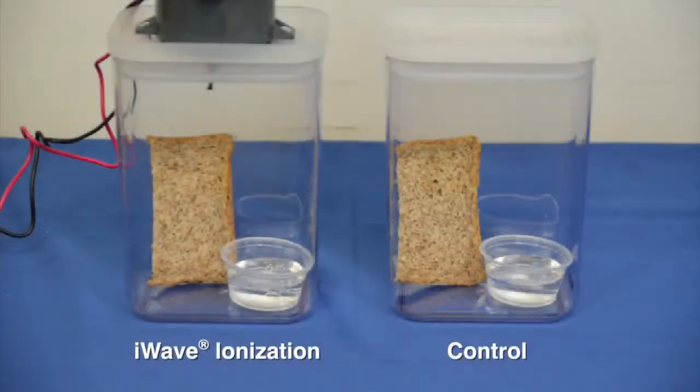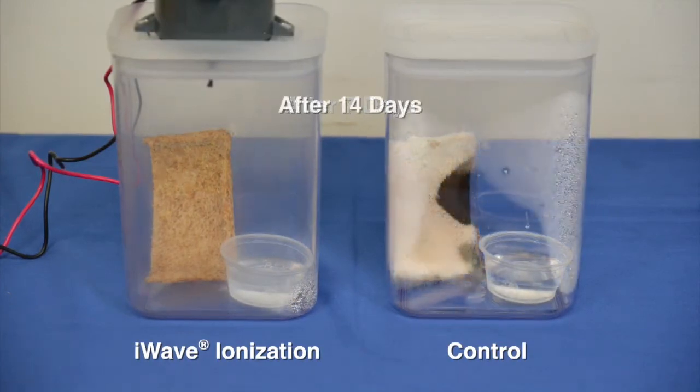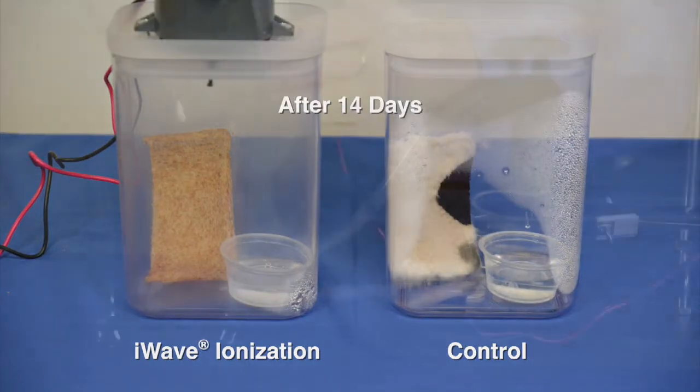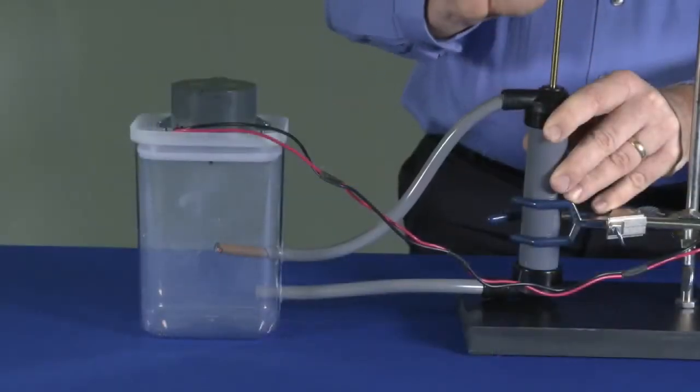A simple demonstration shows how iWave prevents mold from growing on bread over time. This shows how the products address pathogens downstream of the device, at the coil and in the living space. Another demonstration shows how iWave products remove smoke from the airstream within a short period of time.